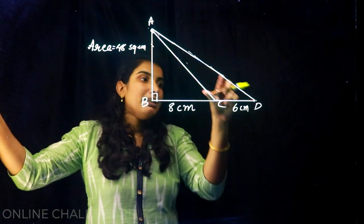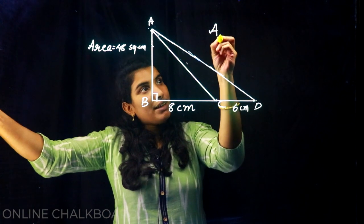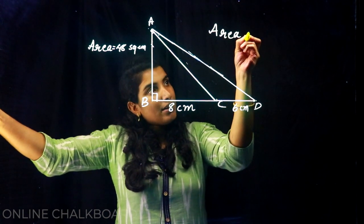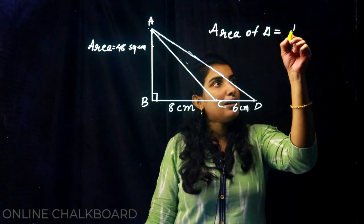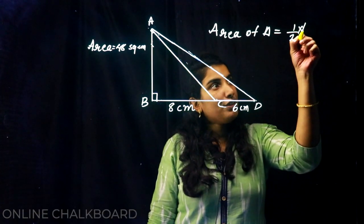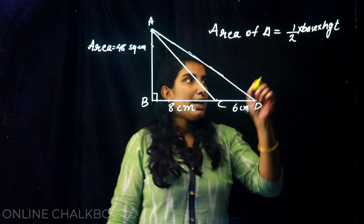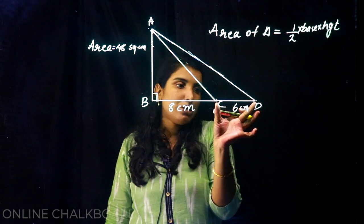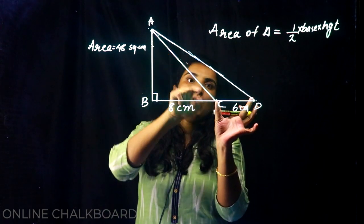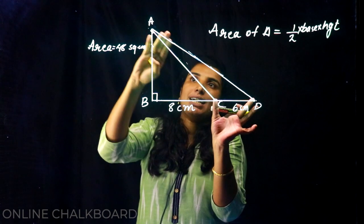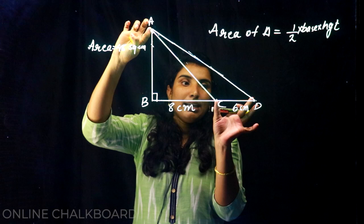We have an area of triangle. The area of a triangle is half into the base into the perpendicular height. The base is CD which is 6 cm. If you see the height, it's just the perpendicular height. Looking at this triangle, you see the base and at the corner of the base, it's the height.